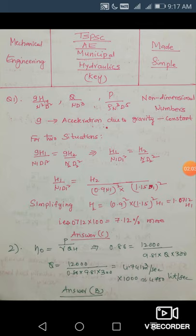Next question: η_o = P/(γQH). He has given the overall efficiency, power of 12,000 kilowatts, γ = 9.81 kN/m³, q is the discharge in m³/s, and he is asking you to find q. He has also given the head.